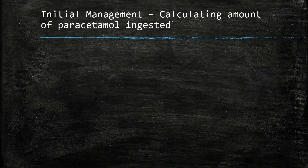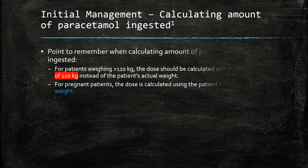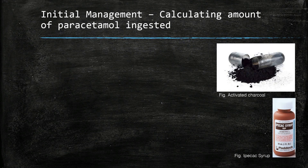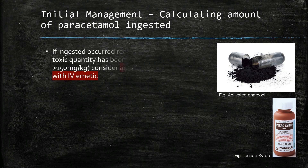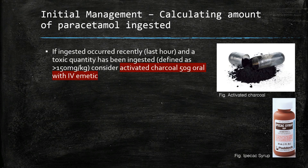Key points to remember when using this calculation: in large patients exceeding 110 kilograms, use 110 kilograms as the maximum weight. For pregnant patients, use their weight prior to pregnancy. Additionally, if the quantity ingested exceeds 150 milligrams per kg and is recent within one hour, consider administering activated charcoal 50 grams orally with an IV emetic.